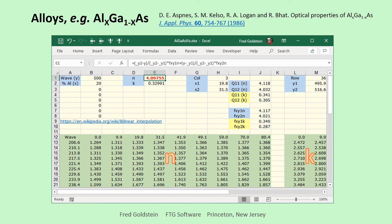Starting with nine aluminum gallium arsenide tables for aluminum fraction X between 0 and 80.4 percent, bilinear interpolation in Excel gives N equals 4.09755 for X equals 20 percent and wavelength equals 500 nanometers.